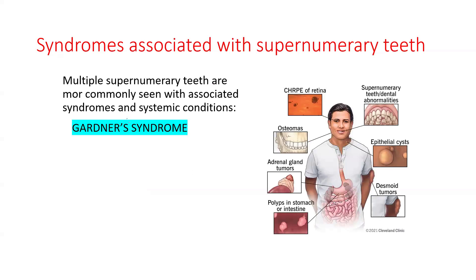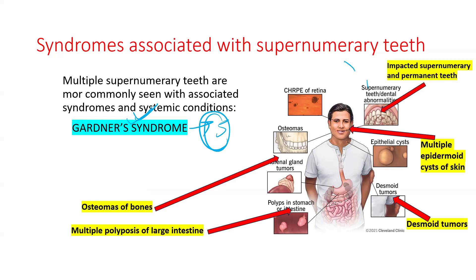The first and foremost syndrome is Gardner syndrome, which comprises five features: one, presence of impacted supernumerary and permanent teeth; two, multiple epidermoid cysts of the skin; three, desmoid tumors; four, multiple polyposes of the large intestine; and five, osteomas of the bone. Early diagnosis can be made because of the supernumerary teeth and osteomas of the oral jaw bones.